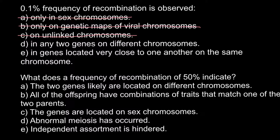Answer D: in any two genes on different chromosomes. We can cross out this answer as well, because the frequency of segregation would be 50% if two genes are located on different chromosomes, and recombination cannot happen between two non-homologous chromosomes.